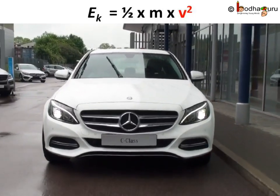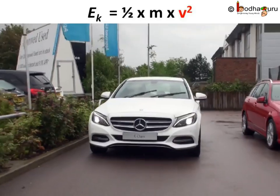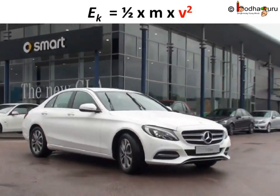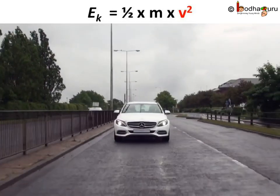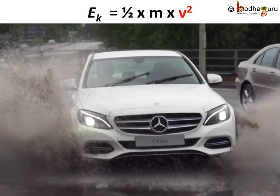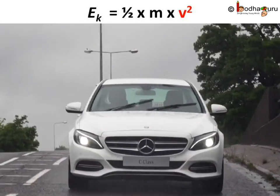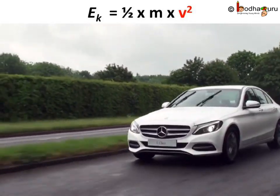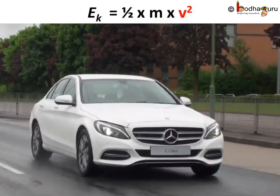Thus kinetic energy possessed by an object of mass m moving with uniform velocity v is given by the formula Ek = ½mv². When a car gains velocity, its kinetic energy increases dramatically.